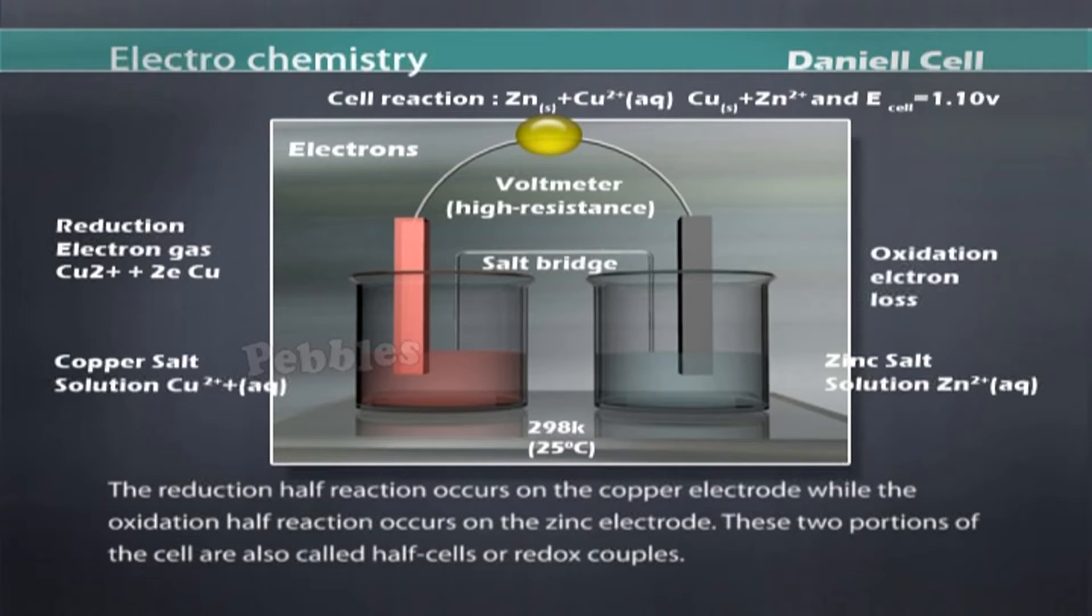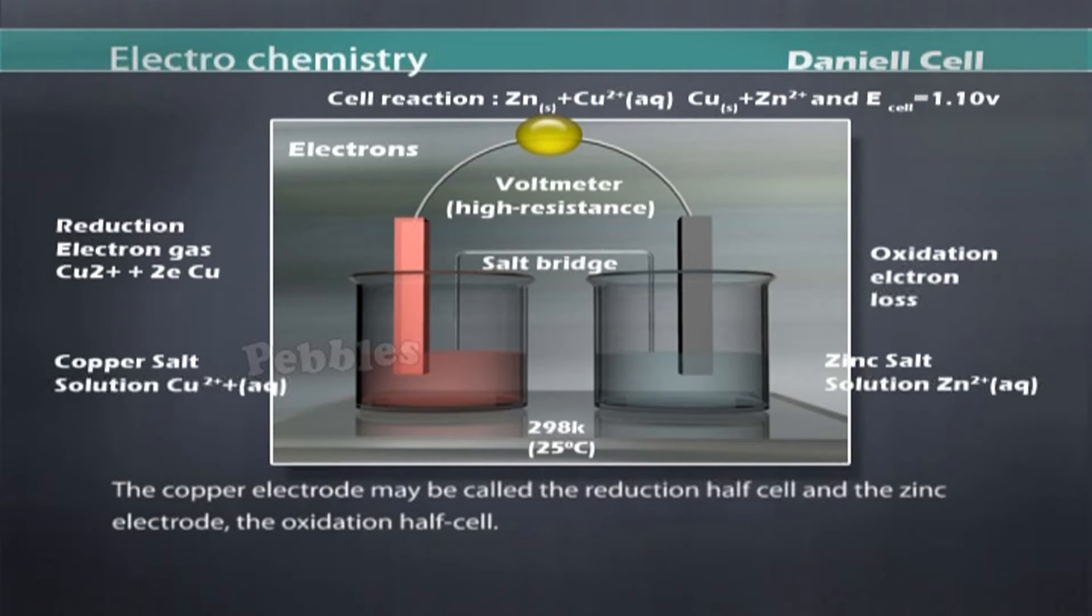The reduction half reaction occurs on the copper electrode, while the oxidation half reaction occurs on the zinc electrode. These two portions of the cell are also called half cells or redox couples. The copper electrode may be called the reduction half cell and the zinc electrode the oxidation half cell.